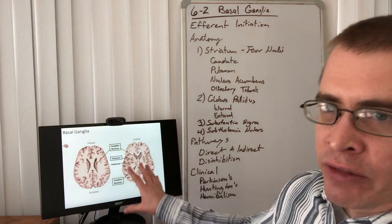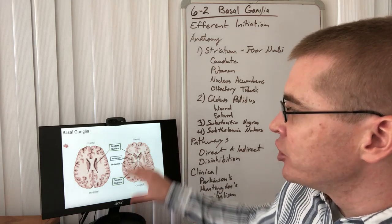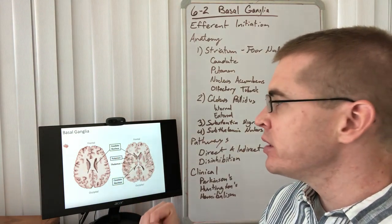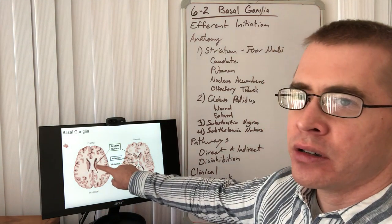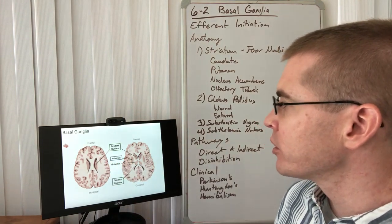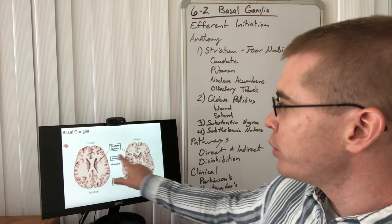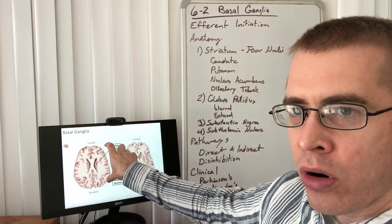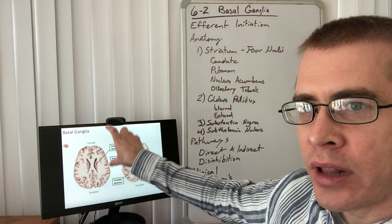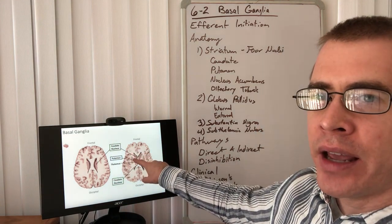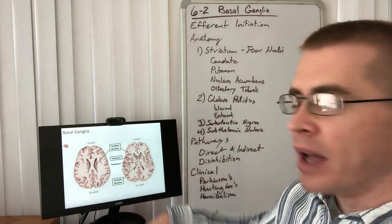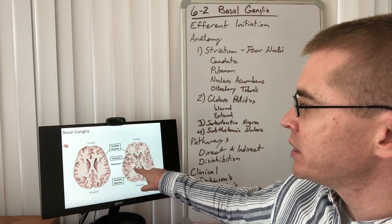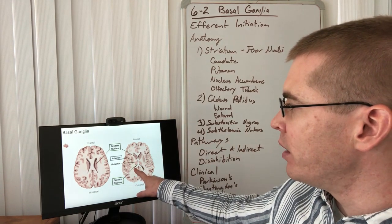Now let's look at these from a different point of view — an axial view from top down, with the front of the brain up and the occipital portion down. We can see the caudate nucleus on the lateral border of the lateral ventricles, and mentally the caudate is actually a C-shape covering the lateral wall of the lateral ventricle. The putamen is separated by the anterior limb of the internal capsule, and the thalamus behind that — the thalamus is not part of the basal nuclei. Here you can also see the tail of the caudate in the posterior portion of the lateral ventricles.